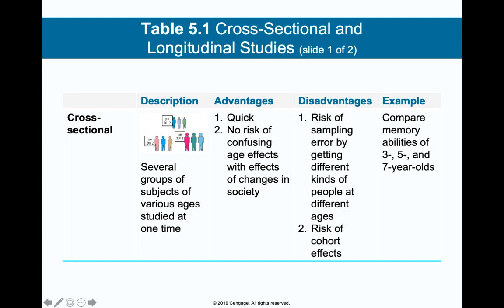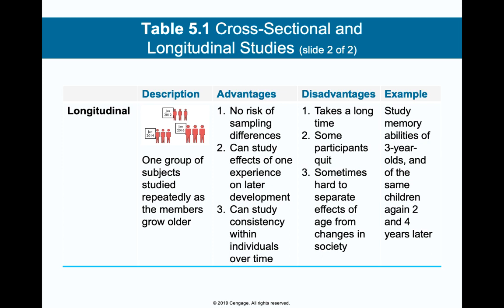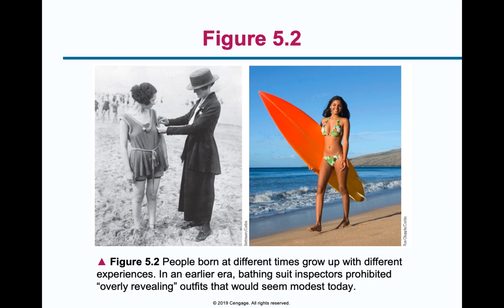If I want to do a longitudinal study, I take the same group but collect information from them at different stages. For example, I can study someone at five years old, then go back at ten, fifteen, and twenty. This gives a better sense of how they're developing across the lifespan. Cross-sectional is all simultaneously at one time; longitudinal is tracking a group across the lifespan. You can see cultural changes — like beachwear from the late 1800s versus modern times — as an example.